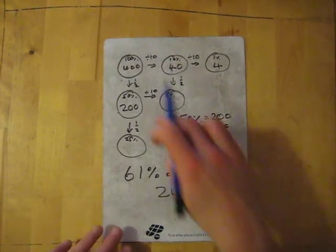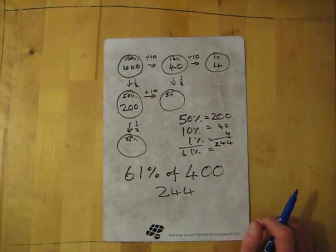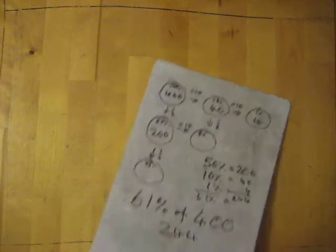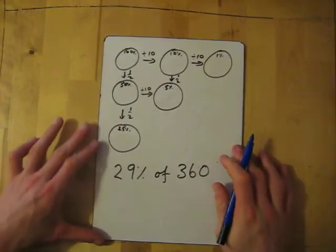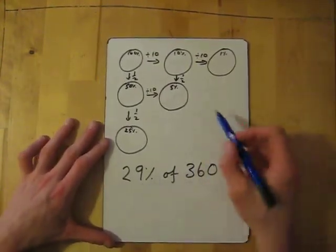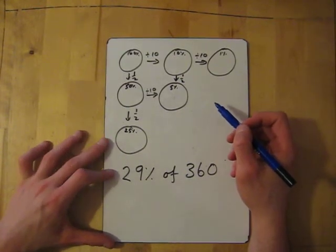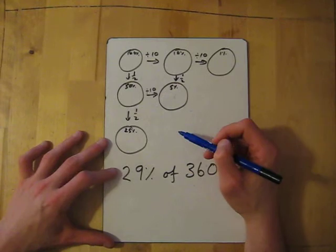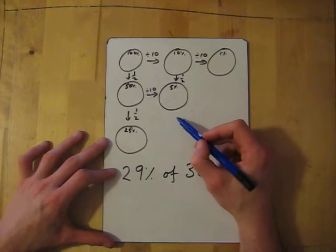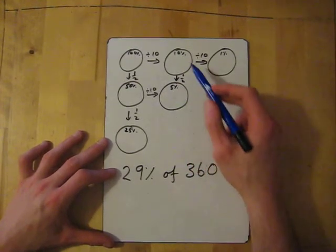Okay, so the grid: across we divide by 10 and down we half. Let's have another go. 29% of 360. What percentages am I going to use? I think I'm going to use 30% and then take away 1% because you can add or take away.